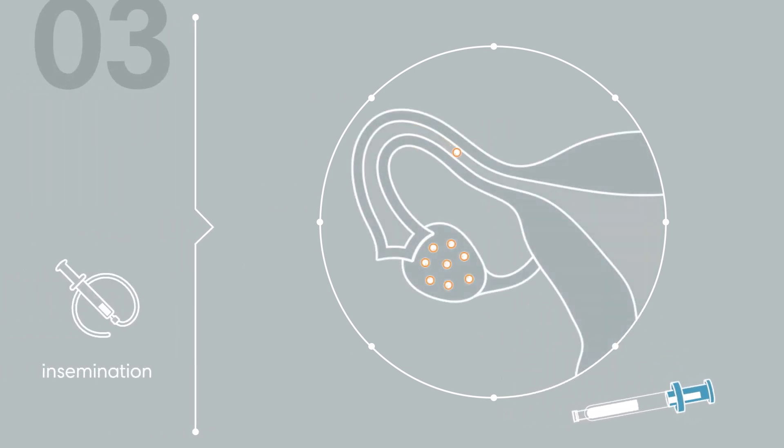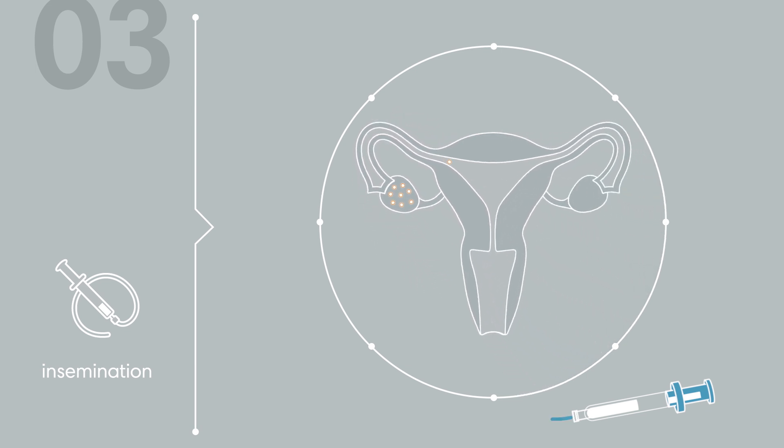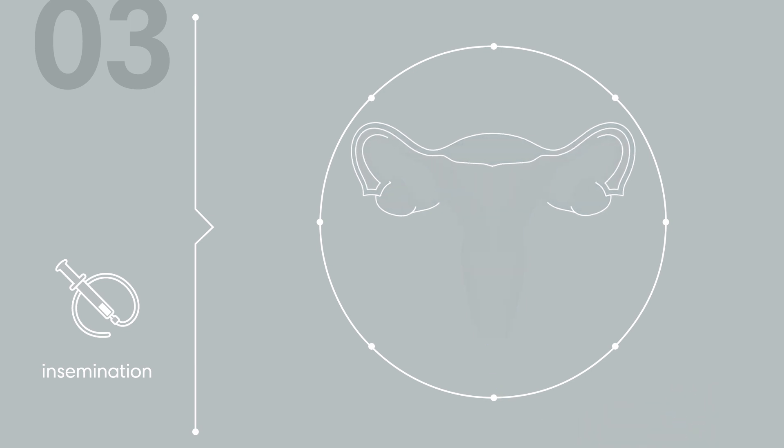The insemination procedure is much like a pap smear. The woman's cervix will be cleaned with a cotton swab, and a small catheter holding the sperm sample will be placed into her vagina and past the cervix. There is little, if any, discomfort, though some women do experience minor cramping or light vaginal bleeding.